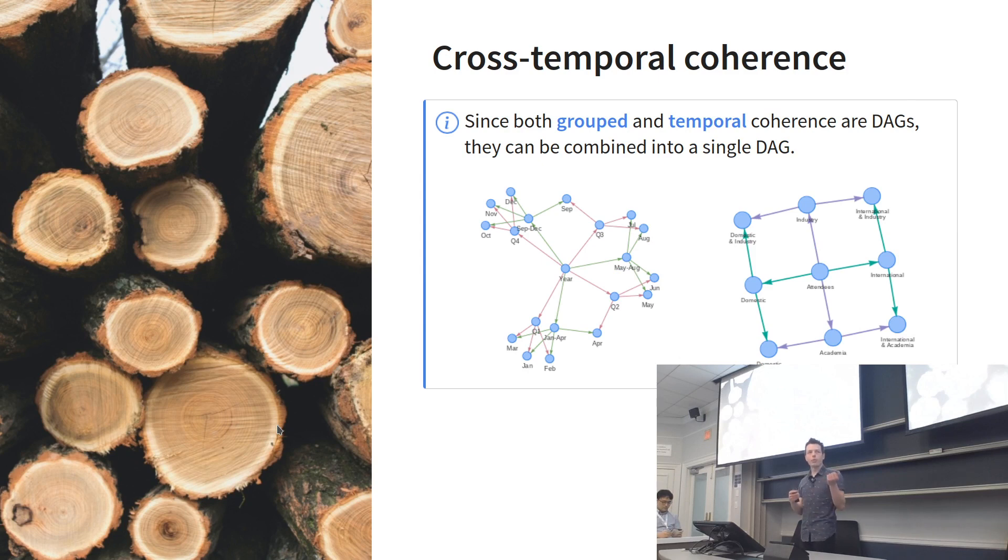Since we have both grouped and temporal coherences being DAGs, we can also naturally create cross-temporal hierarchies. If you take the top level of either of these graphs and place that in every node of the other graph, you'll end up with a cross-temporal graph. It would be far too big to show here. All of these graphs I've shown so far, it's possible and not too difficult to convert into the summation matrix we saw before. Therefore, we can make use of min-trace and various other methods for reconciliation and get our optimal coherent forecasts.